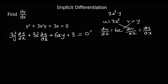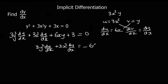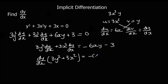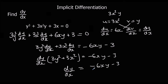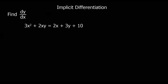Rearranging to make dy/dx the subject: taking away 6xy and taking away 3 leaves us with 3y squared dy/dx plus 3x squared dy/dx equals minus 6y minus 3. Factorising out dy/dx gives dy/dx times (3y squared plus 3x squared). Dividing both sides by (3y squared plus 3x squared) gives us our dy/dx.